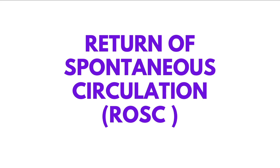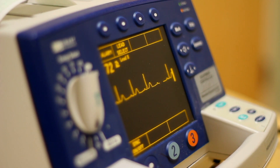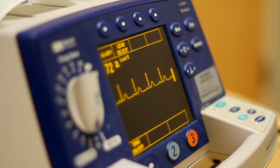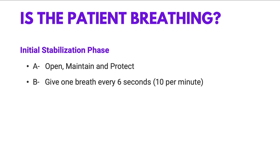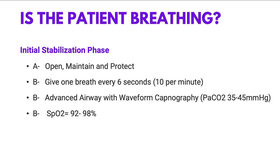The adult immediate post-cardiac arrest care algorithm starts with ROSC, or return of spontaneous circulation. Immediately when ROSC is achieved, check if the patient is breathing. If your patient is not breathing, give one breath every six seconds — that's 10 breaths per minute. Also avoid ventilating the patient too quickly or with too much volume. We should also place an advanced airway with waveform capnography, aiming for 35 to 45 mmHg.